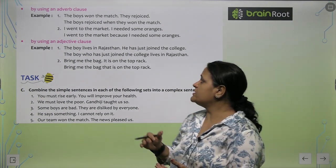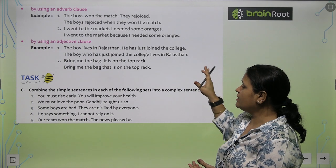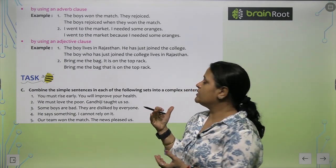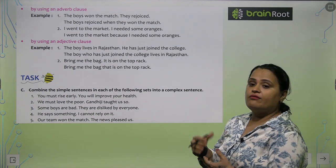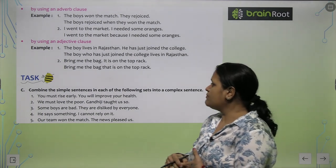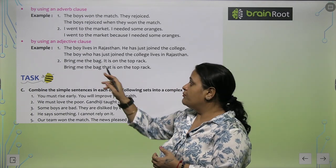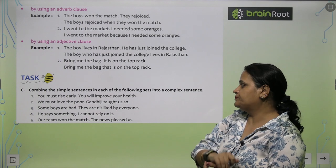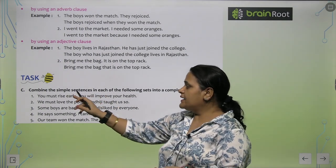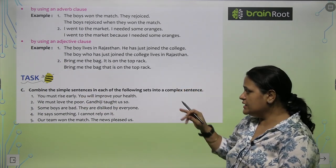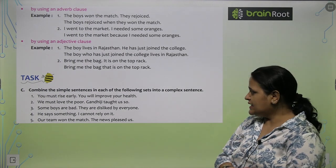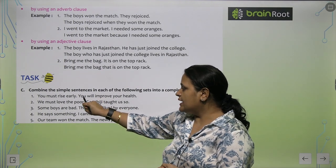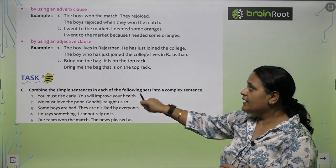By using an adjective clause — 'The boy lives in Rajasthan. He has just joined the college.' Combined: 'The boy who has just joined the college lives in Rajasthan.' 'Bring me the bag. It is on the top shelf.' Combined: 'Bring me the bag that is on the top shelf.' Now combine the simple sentences into a complex sentence — 'You must rise early so that you will improve your health.'